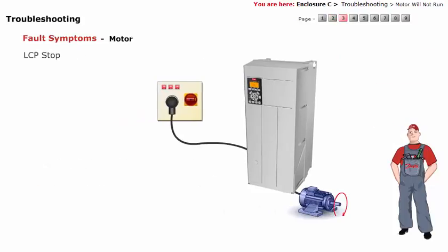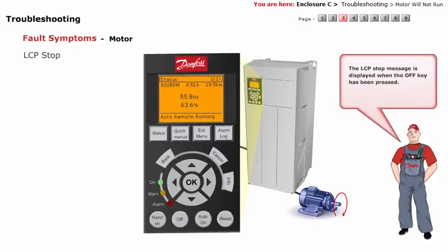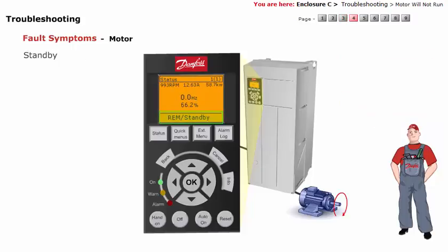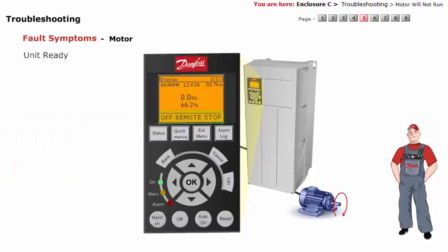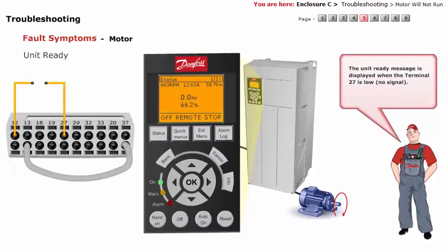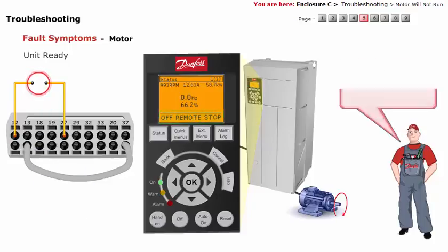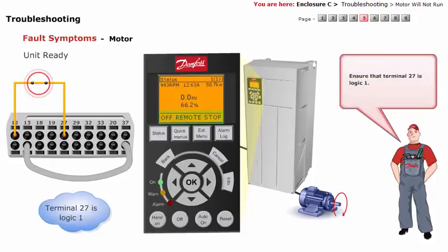LCP Stop: The LCP Stop message is displayed when the off key has been pressed. The bottom section of the display will also be flashing when this occurs. Stand By: The standby message is displayed when there is no start signal at terminal 18. Ensure that a start command is present at terminal 18. Unit Ready: The unit ready message is displayed when terminal 27 is low — no signal. Ensure that terminal 27 is logic 1.